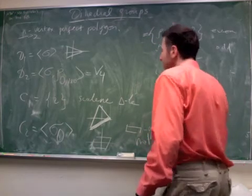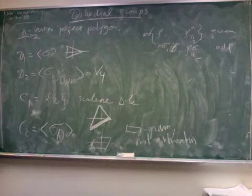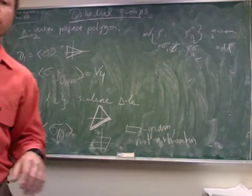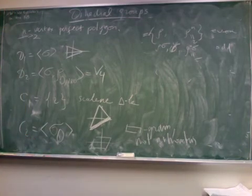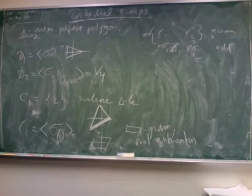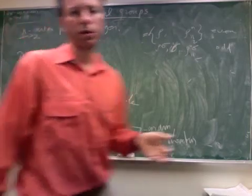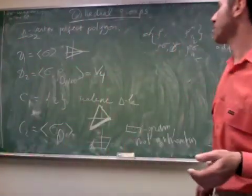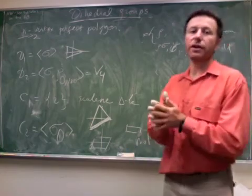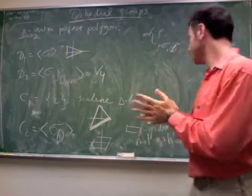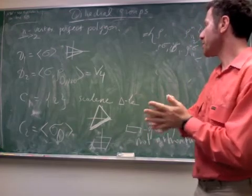So we covered all dihedral groups and all cyclic groups. So that means we presented a polygon for each of them whose symmetry group is one of the dihedral groups. So do you think that the converse is true? In other words,